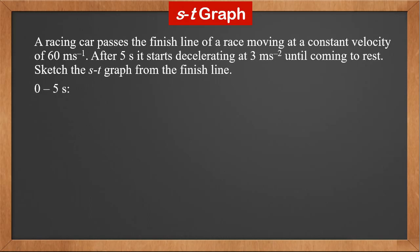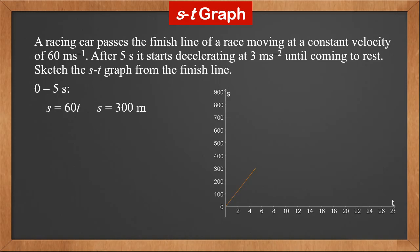From 0 to 5 seconds, the car moves at a constant velocity. So the displacement S equals 60 times T. For 5 seconds, it has traveled 300 meters. The graph in this interval is a straight line.